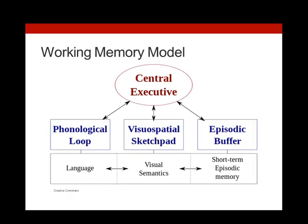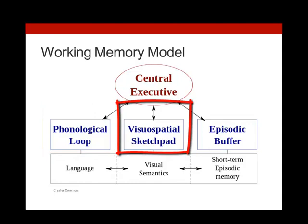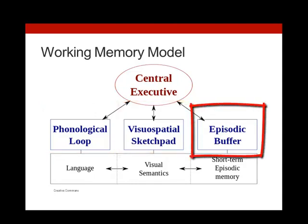Baddeley's model is based on research that shows that visual and verbal interpretation can be done simultaneously. Not only can we perform a verbal and visual task at the same time, we can do them almost as efficiently as if we were completing each task on its own. However, if we try to complete two visual tasks at the same time, we will lose a lot of efficiency. These separate systems are represented by the phonological loop, through which we interpret sounds; the visuospatial loop, through which we interpret visual stimuli; and the episodic buffer, which we use to remember chronological episodes or stories in the short term.